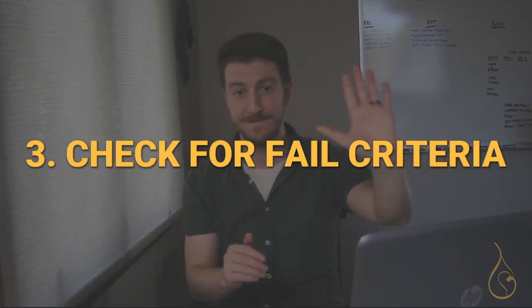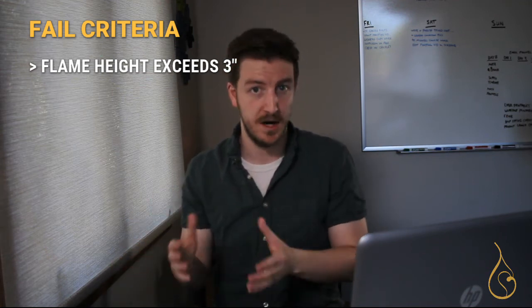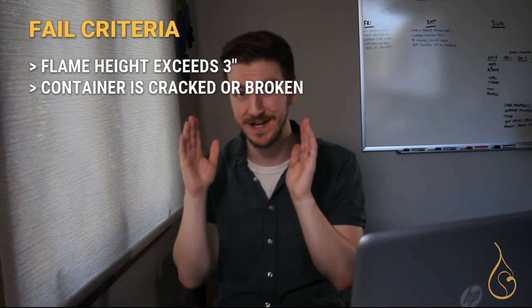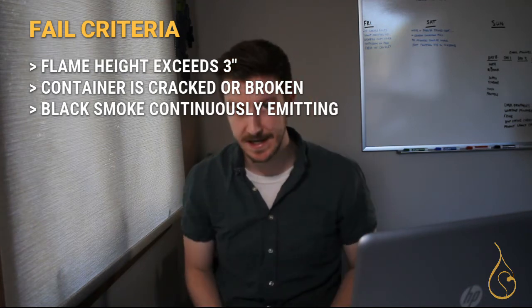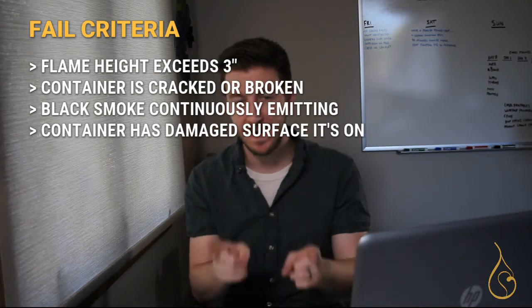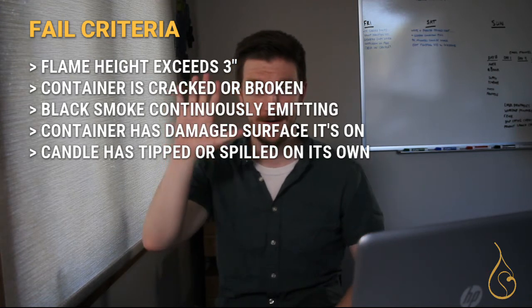Step three is actually several different parts. After we light the wick, about five minutes after and also on the hour after, we're going to observe and check for any fail criteria. Failure criteria number one is if your flame height exceeds three inches. They make an exception if it's a religious candle, but the vast majority of container candles being tested, three inches. Fail the test if the container is cracked or broken. Fail if black smoke is continuously emitting from the candle. Fail if the container has damaged the surface it's sitting on, usually from excess heat. And also fail if the candle has tipped or spilled over on its own accord. Those are the five hardcore failure criteria.